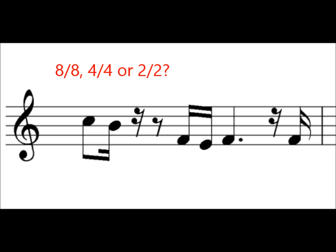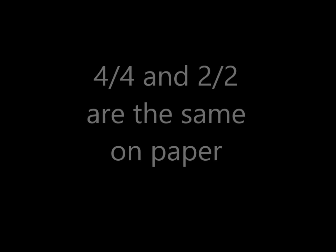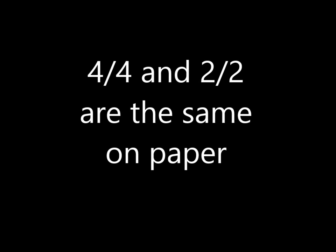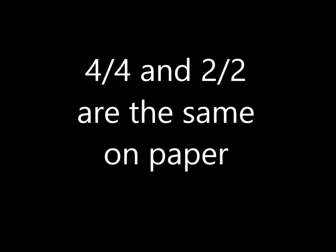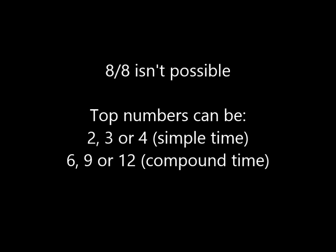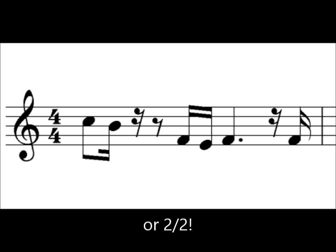Is it eight eight, is it four four or is it two two? Actually this is a bit of a trick question. The fact is that four four and two two look exactly the same on paper. There's no way to tell the difference just by looking. The difference between four four and two two is something that some people can tell by listening, but you can't tell just by looking. It's not eight eight because the top number of the time signature is never eight, but you could put the answer four four or two two for this bar and both of them would be correct.